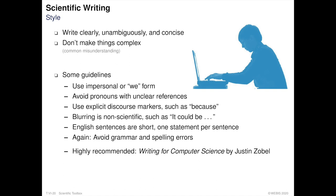Scientific writing has a very unique style that is different from normal text. It should be as clear, concise, and unambiguous as possible. A common misunderstanding is that scientific writing needs to be complex. On the contrary, scientific writing explains concepts in the simplest, most exact way possible.